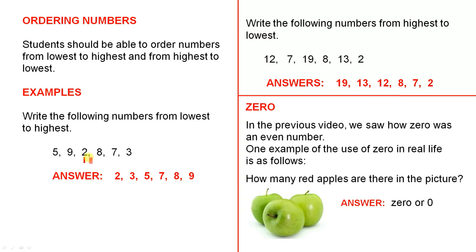We have 2. So if you mark them off, you won't miss any. 3, 5, 7, 8, 9. And here they are from lowest to highest.